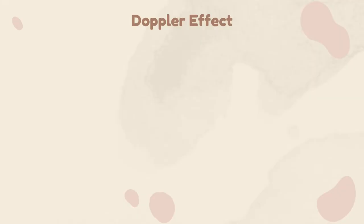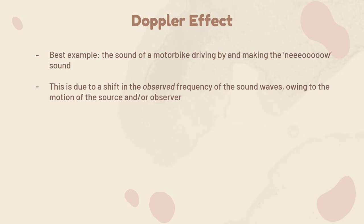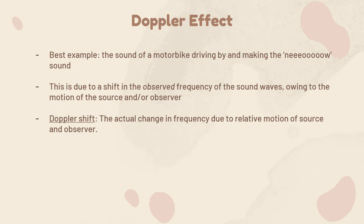The best example of the Doppler effect is standing on the side of the road as a motorbike drives past, making that characteristic sound. That change in sound is due to a change in the observed frequency of the sound waves, caused by relative motion between the source — where the sound is coming from — and the observer. The Doppler shift is the actual change in frequency due to this relative motion.